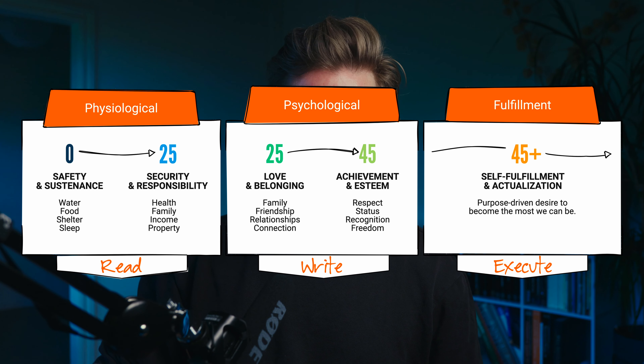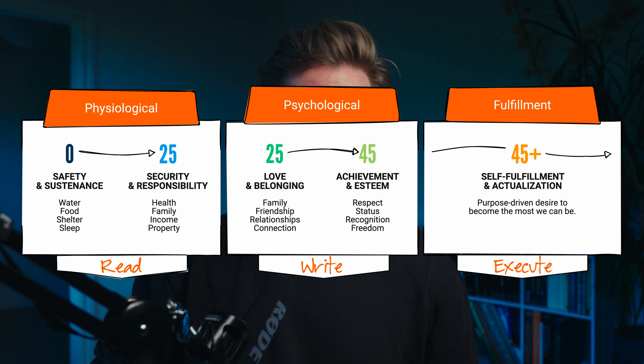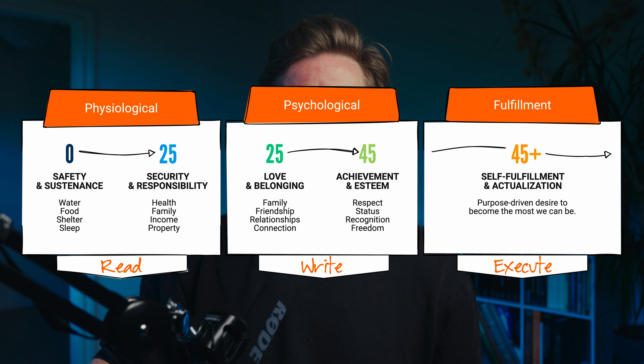Maslow's hierarchy of needs is a well-known model of human needs, usually depicted as a hierarchical pyramid. Instead, I've taken influence from this and aligned it to our age brackets that show a progression throughout each. As always there's overlap, but this helps to consolidate the hierarchy of needs as they take precedence through different stages of our lives.